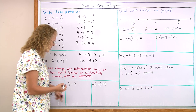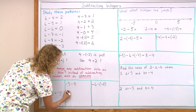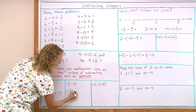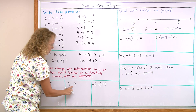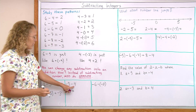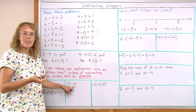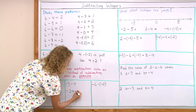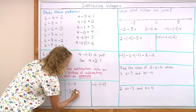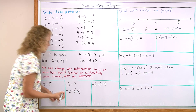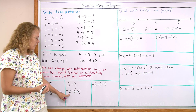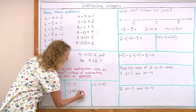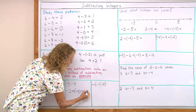Over here, this minus 3 won't change. I'm going to change this into an addition, and instead of 4, I add now negative 4. So this is negatives, and add some more negatives. The answer is negative 7.